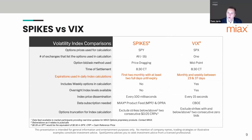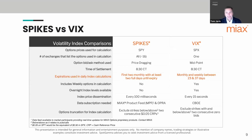Spikes is based on SPY options across all 16 exchanges with that price-dragging methodology. One thing to note is that we use the first Friday weekly expirations in the calculation, whereas VIX uses a few other expirations a couple days out. But ultimately both products settle on the upcoming monthly options 30 days out — for the June contract we'd use the July options on the third-Friday expiry.